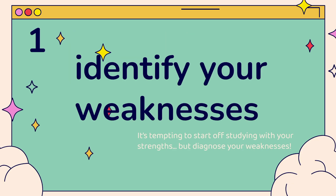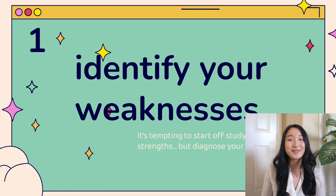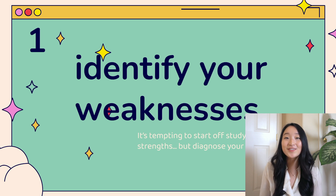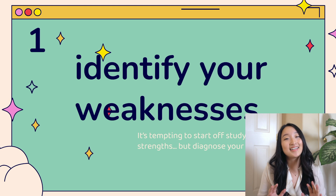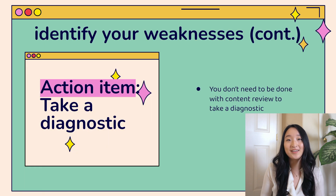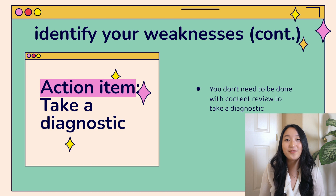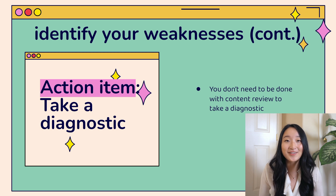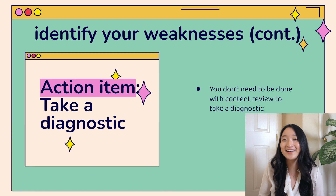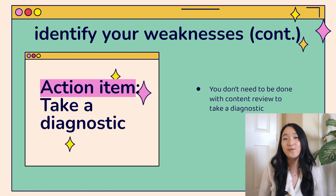Tip number one is to identify your weaknesses. It's really tempting to start off studying with your strengths because it feels easier, but it's really important to identify which topics you need to spend more time reviewing early on. Action item number one for identifying your weakness is to take a diagnostic. I thought I needed to finish all my content review before taking a diagnostic because I wanted an accurate representation of where I was. However, it's a diagnostic for a reason — you don't need to have all of your studying done. You're never going to feel 100% prepared. It's just meant as a guidepost to what to study in the future based on the format of your exam.